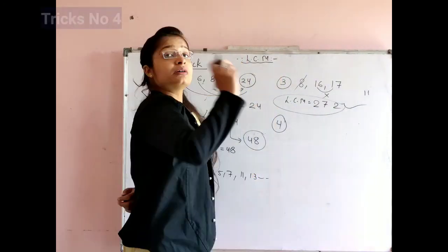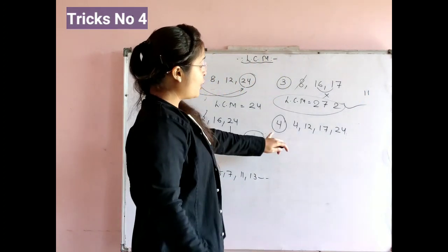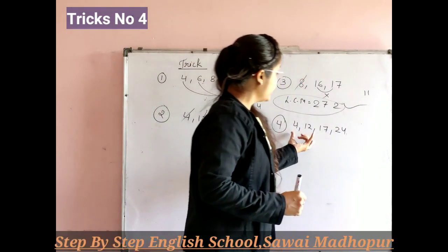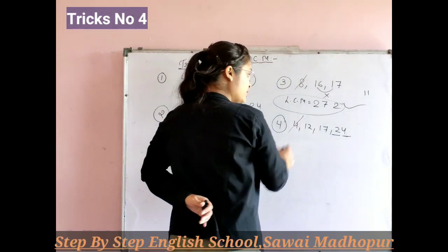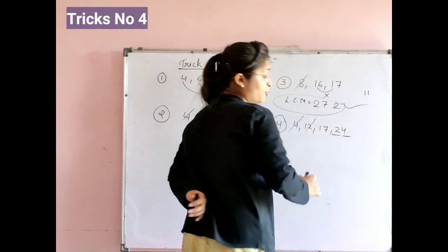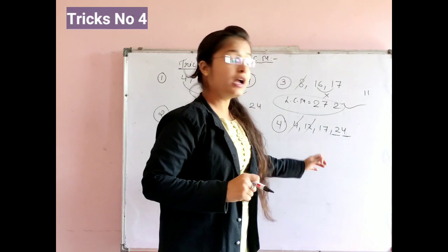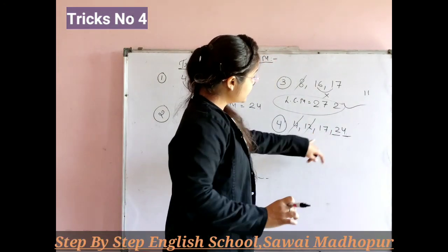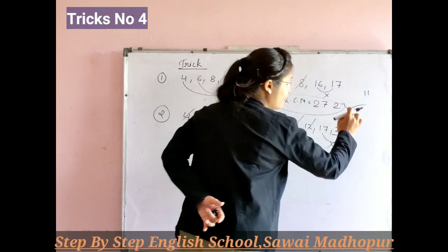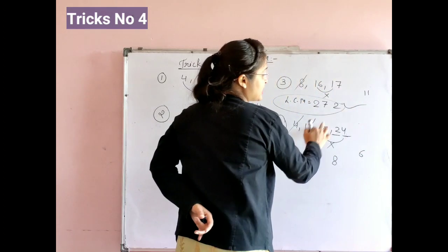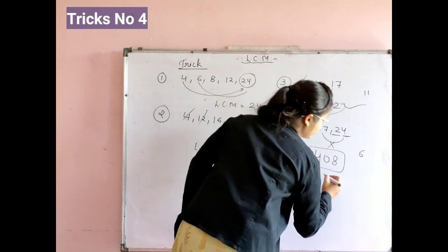Now we will see Trick Number 4. The question is 4, 17, and 24. Look at the largest number, 24. Does 4 divide 24? Yes. Does 12 divide 24? Yes. Does 24 divide 24? Yes. But does 17 divide 24? No — because 17 is a prime number. So we multiply 24 by 17: 17 times 4 is 68, carry the 6, 17 times 2 is 34, plus 6 is 40. So 17 times 24 equals 408. The answer is 408.